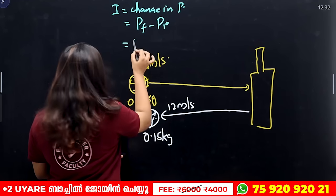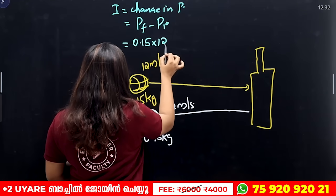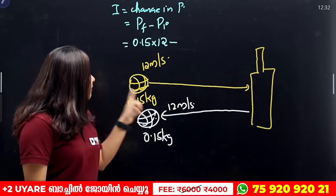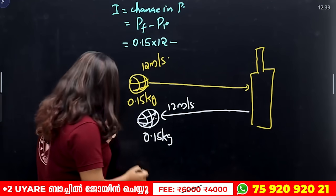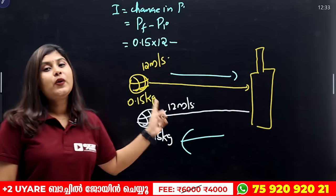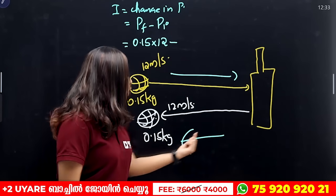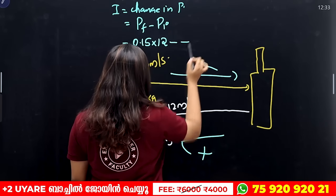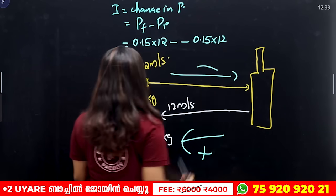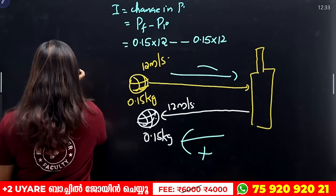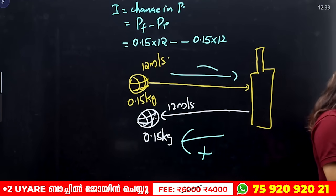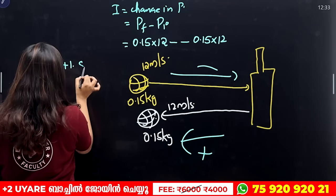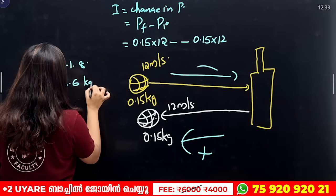Momentum is mass into velocity. The mass is 0.15 kg, and it is moving at 12 m/s. Since the direction is opposite, we take the opposite direction into account. So we have 2 times 0.15 into 12, which equals 2 times 1.8, giving us 3.6 kilogram meter per second.